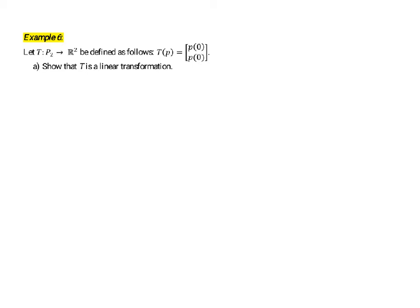So remember, to show that it's a linear transformation, we should first take two generic elements of P2. So let's let P1 and P2 be vectors in P2.